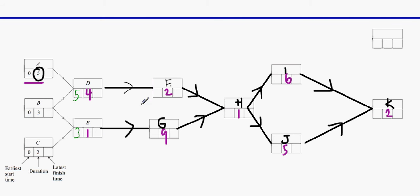For F, only D connects into it, so five plus four is nine. For G, only E connects into it, so three plus one is four. For H, both F and G connect: nine plus two is eleven, four plus nine is thirteen — thirteen is the biggest, so that goes there. Thirteen plus one is fourteen, so fourteen goes forward. Fourteen plus six is twenty, fourteen plus five is nineteen — twenty is the biggest.